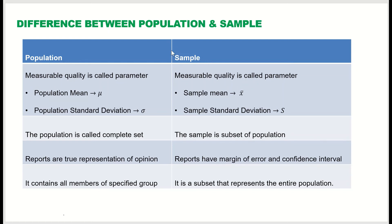Similarly, for a sample, the measurable quality is called a statistic — not a parameter. For example, the sample mean is x-bar, and the sample standard deviation is lowercase s. So the measurable quality for a sample is called a statistic.